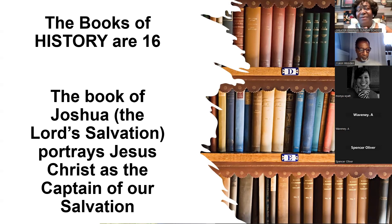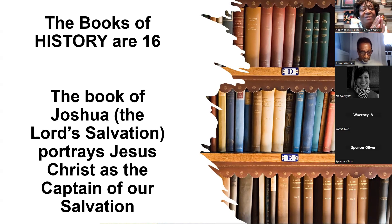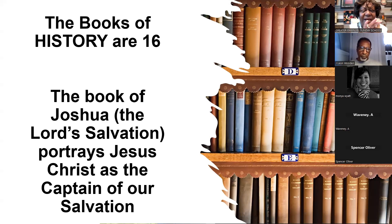Every book in the Bible, all 66 books, points you to Jesus Christ. You just have to be a student of the Bible and study how God, in his infinite wisdom and knowledge, wants us to see the entire plan of salvation from Genesis all the way to Revelation. All of this started way before we were ever even thought of. God knew there was going to be a problem with humanity, and he already made the plan before we were even born — that he would deliver us, that he would redeem us.